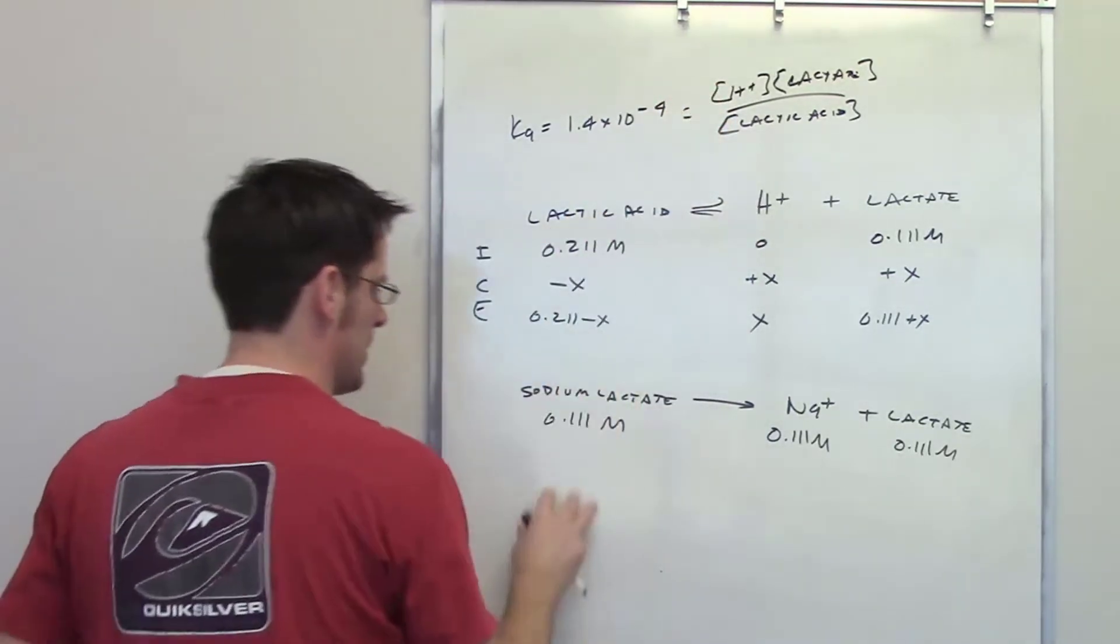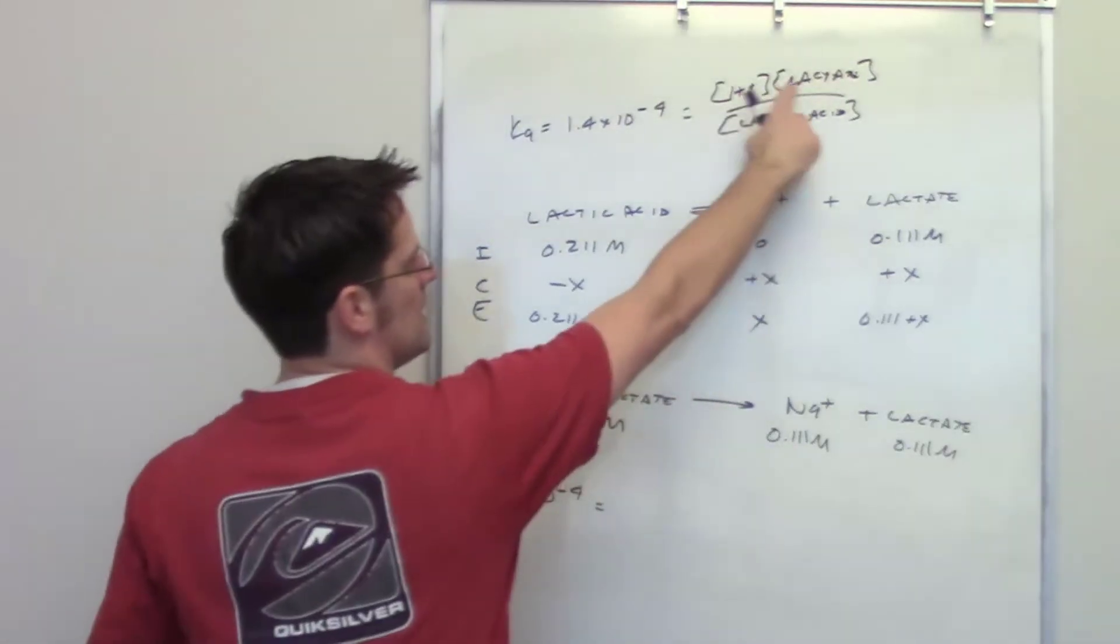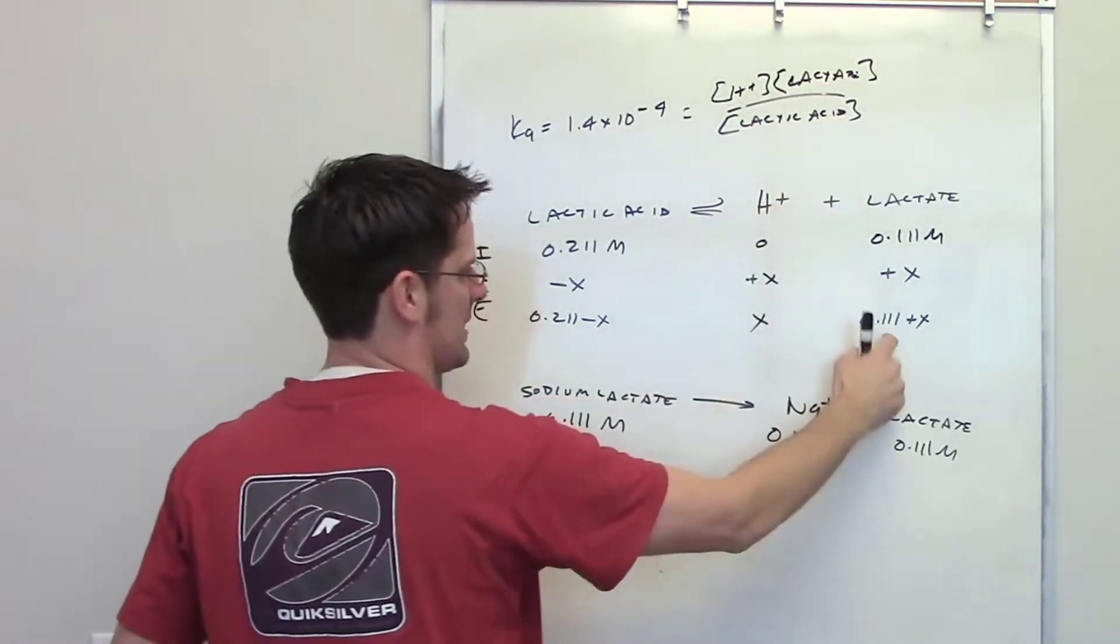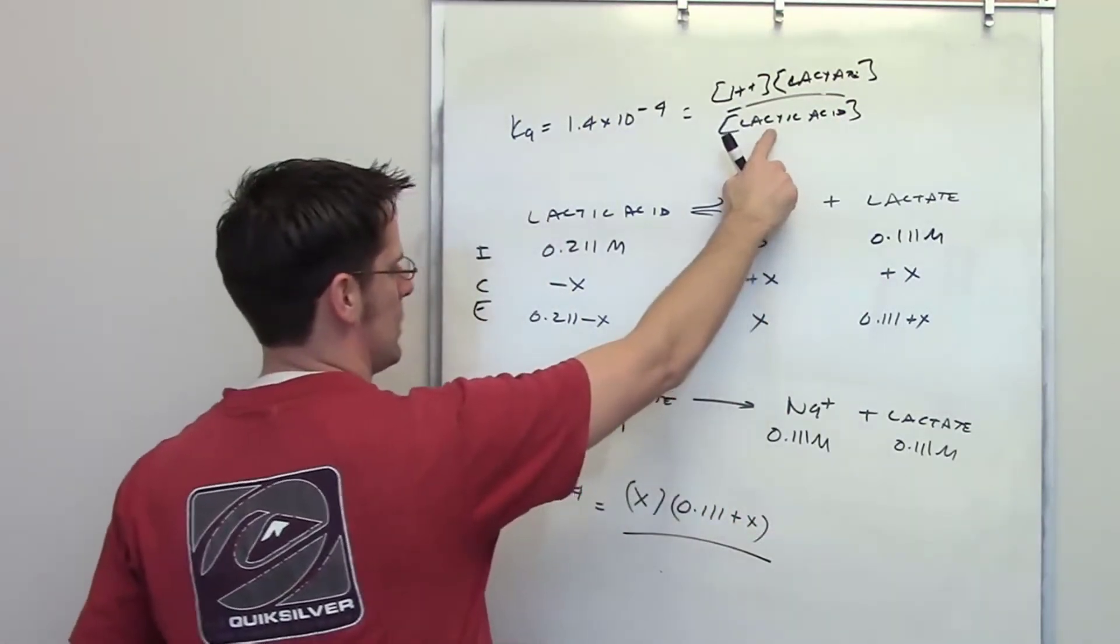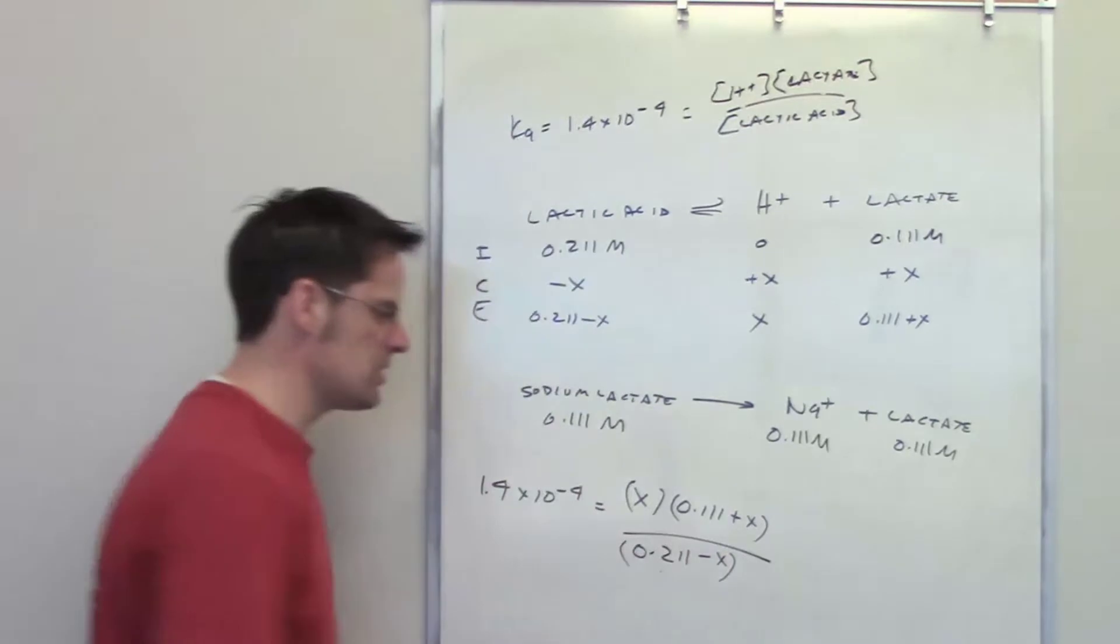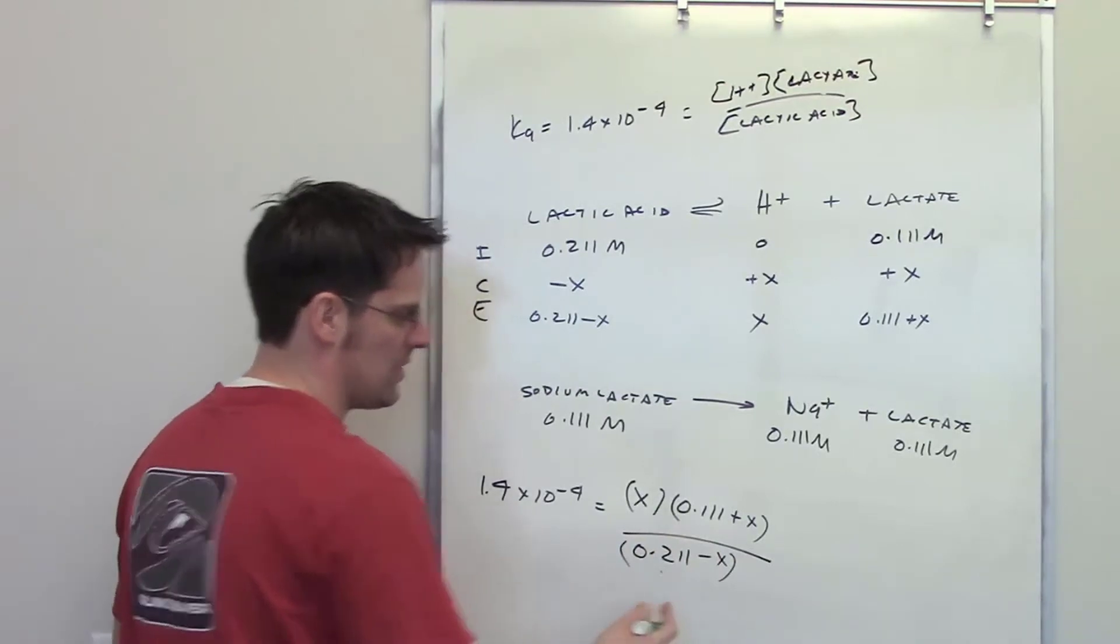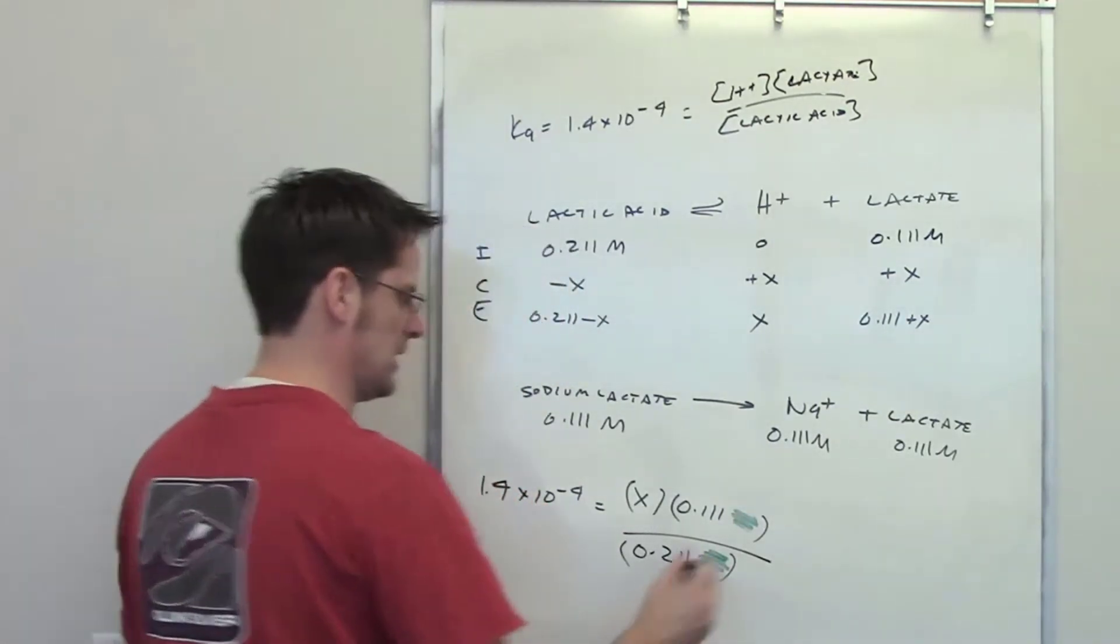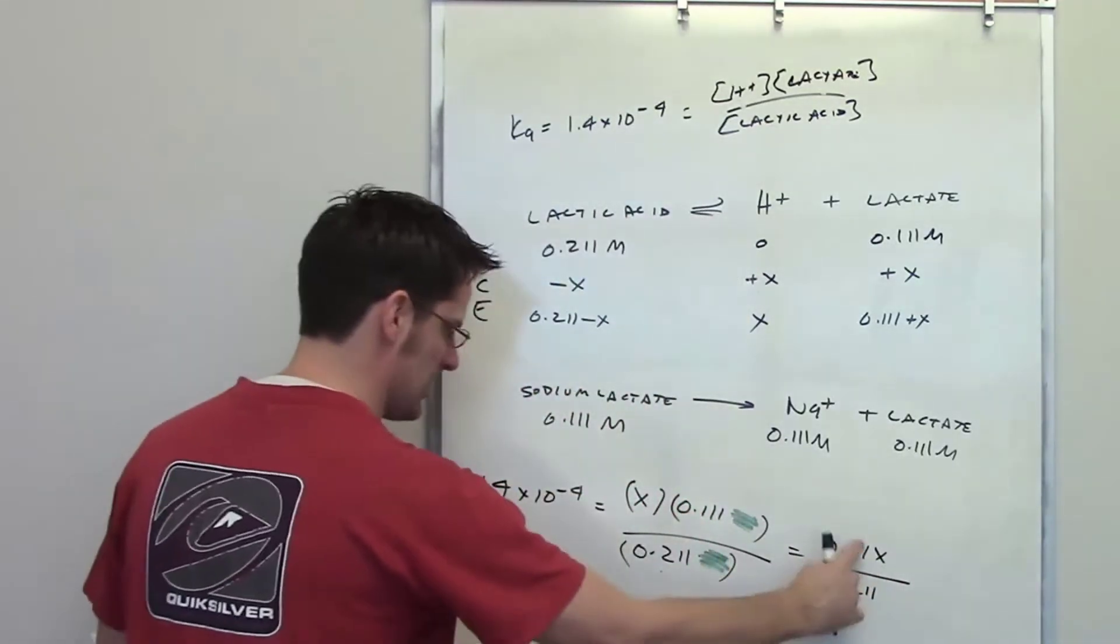I'm going to move this information down here to give us more room. So the Ka is 1.4 times 10 to the negative fourth. And I set that equal to this expression up here, H+ at equilibrium is equal to X. The concentration of lactate is 0.111 plus X at equilibrium. And that's going to be divided by the equilibrium concentration of lactic acid, which is 0.211 minus X. Now, as I've told you in the other videos, these X values are going to be so small relative to the 0.11 and the 0.211 that I can just throw them out to simplify things. So I'll just cross them out, pretend that they're not there.